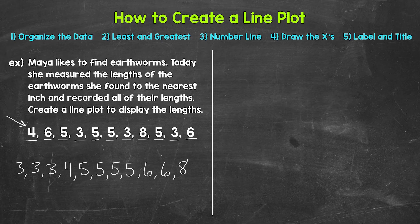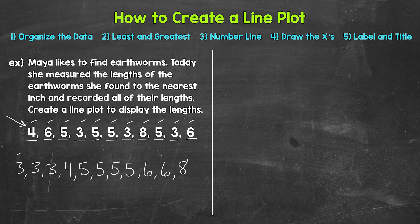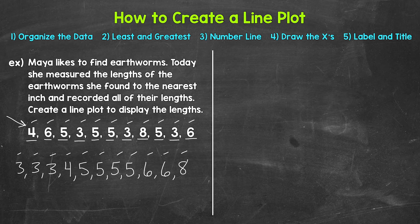Let's double-check everything. Counting our organized list gives us 11 numbers, and counting the original list also gives us 11 numbers — so we are good to go. We just want to make sure we didn't skip anything or count anything twice, so it's always a good idea to double-check. Step one is done — we organized the data.